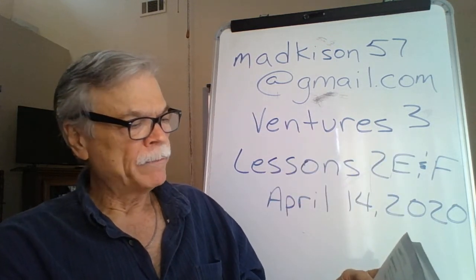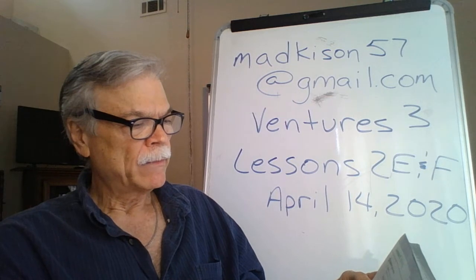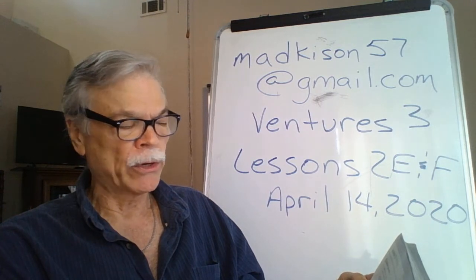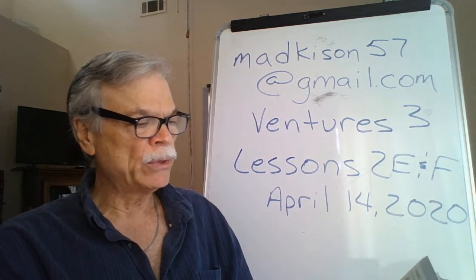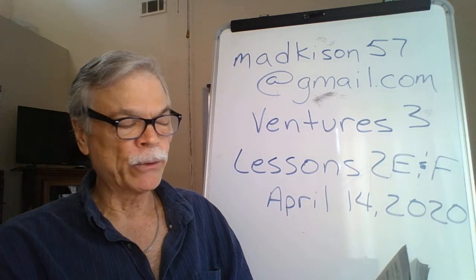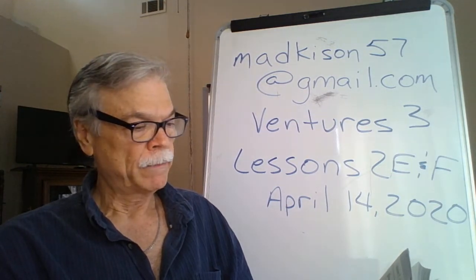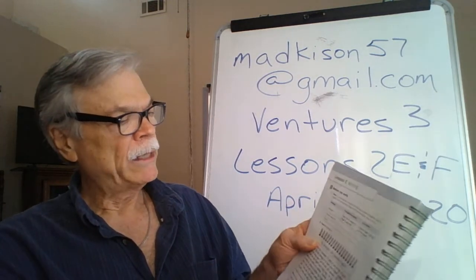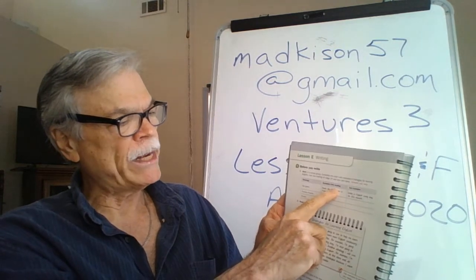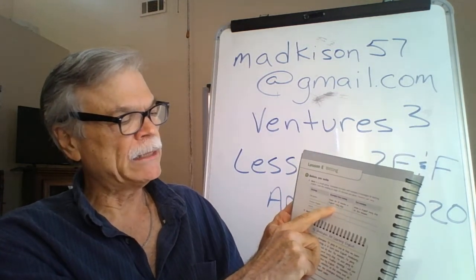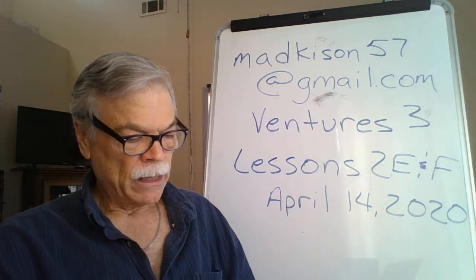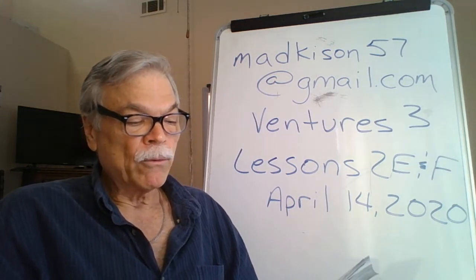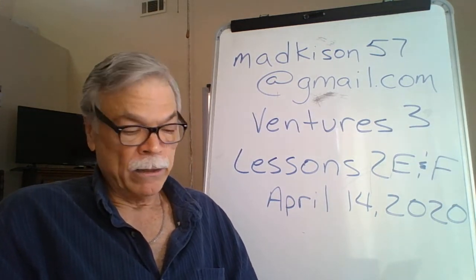Let's look at part one, 'Before You Write.' This says work in a small group and complete the chart with examples of strategies for learning English. Use the reading on page 24 and your own ideas. The first strategy is 'set goals.' In the book, it says examples from the reading: read for 15 minutes in English every day. Then you could write an example of how you have set a goal — you might say, write in English every day for five minutes.